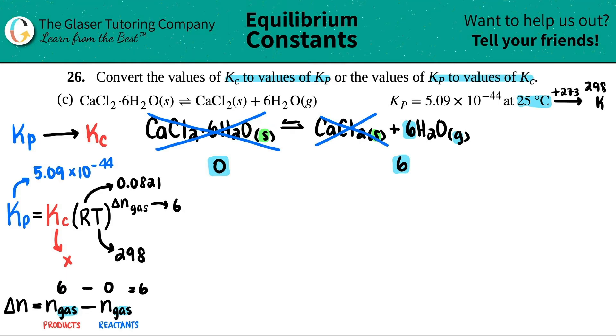Now we have everything. So let's just plug it all in. Kp was 5.09 times 10 to the negative 44th. And this equals the Kc, which is what we're solving for, times it by RT. So 0.0821 times 298. Close it up. And then we're going to raise it to the six.